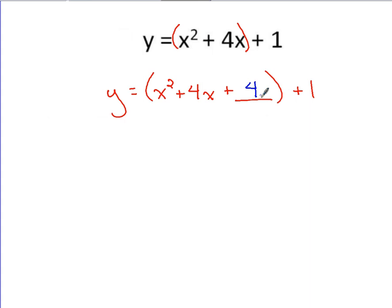We have now changed the overall value of the quadratic function by adding on 4. So we've got to balance this out by taking away 4 out here. And when we do that, we have now completed the square for this parentheses portion.